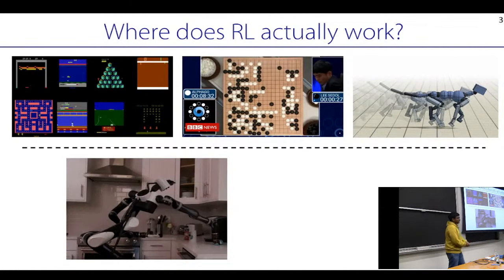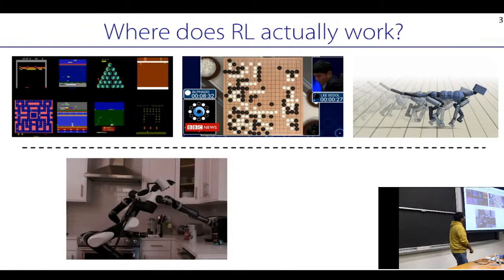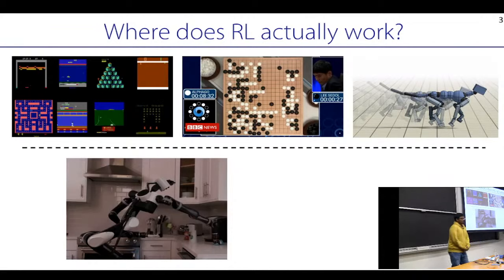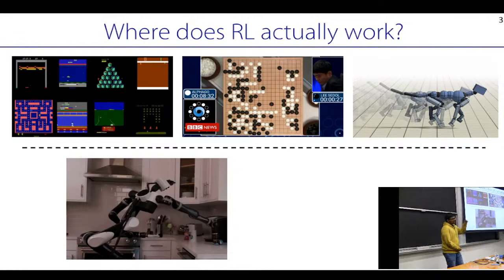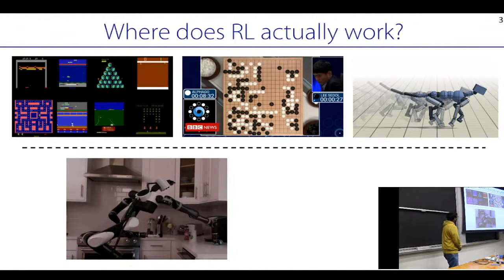Where does RL actually work? It works well in scenarios like Atari games, the game of Go, and simulated character control. In all of these settings, RL works great — arguably better than most other things we have — and we have superhuman performance in many of these scenarios. It works great in these simulated game-type settings.